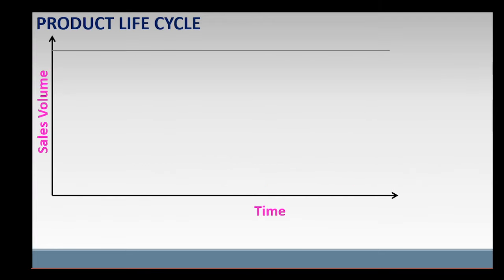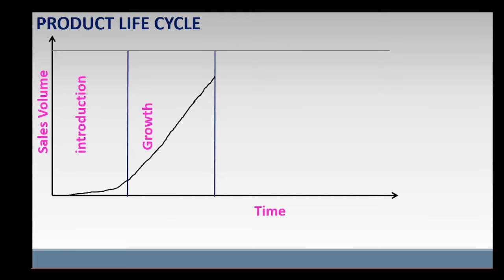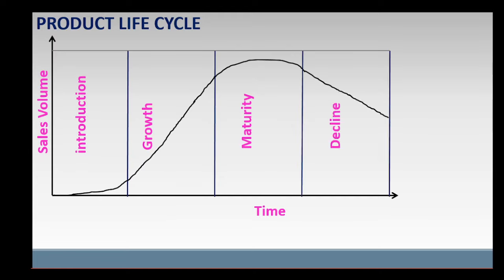The product life cycle begins with the introduction of the new product. The typical product life cycle for a product has four phases: introduction, growth, maturity, and decline.